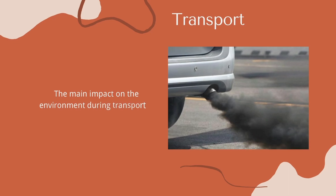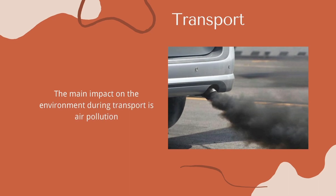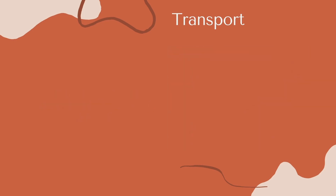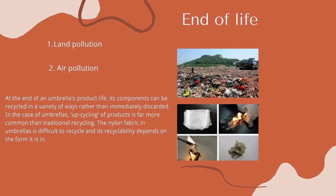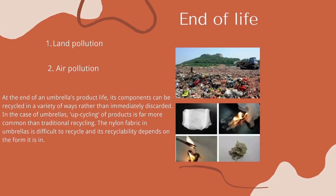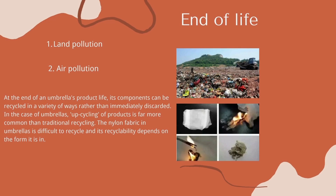For transport, the main impact on the environment is air pollution. At the end of an umbrella's product life, its components can be recycled in a variety of ways rather than immediately discarded. Upcycling of products is far more common than traditional recycling for umbrellas. The nylon fabric in umbrellas is difficult to recycle and its recyclability depends on the form it is in. As umbrellas are made of polyester, when burned they release carbon dioxide and irritating gases, which can lead to air pollution.